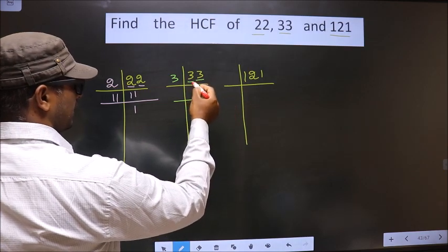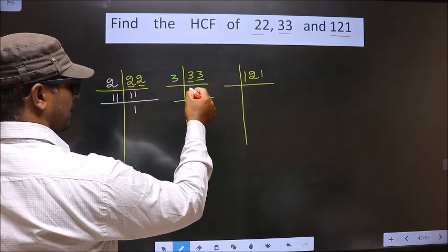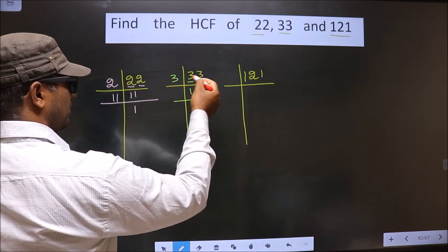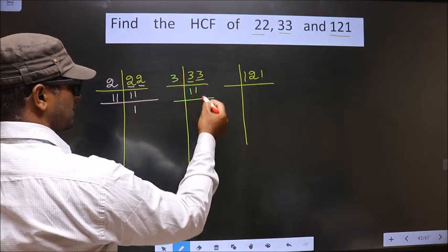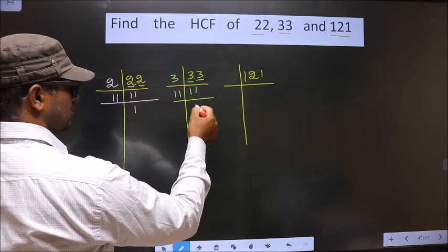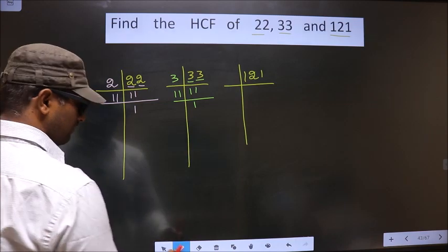Now, first number is 3. When do we get 3 in 3 table? 3, 1, 3. Next number is 3. Now, here I got 11. 11 is a prime number. So we take 11 and 1.